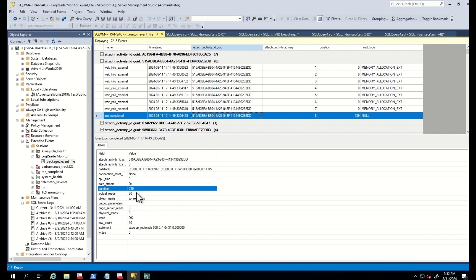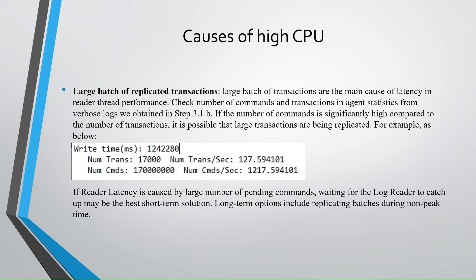If CPU time is higher, this means that the log thread is running but latency is being observed because you have high load. High load can be caused by several causes. The first one is a large batch of replicated transactions. Large batches of transactions are the main cause of latency in reader thread performance. Check the number of commands and transactions in agent statistics from the verbose logs obtained in step 3. If the number of commands is significantly higher compared to the number of transactions, it is possible that large transactions are being replicated. If reader latency is caused by a large number of pending commands, waiting for the log reader to catch up may be the best short-term solution. Long-term options include replicating batches during non-peak time.